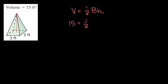What is the area of the base? Well, as you can see, it's a square — a three by three. So the area of the base is going to be three times three. And then we're going to multiply that by the height, which we don't know yet, so we're just going to plug in an H for the height.